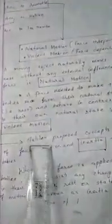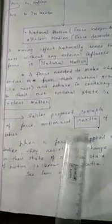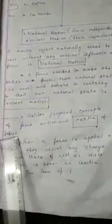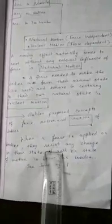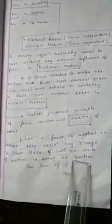Now I am going to talk about Galileo's ideas. Galileo proposed the concepts of force, motion, and inertia of bodies. The new term here is inertia. When a force is applied on bodies, they resist any change in their state of rest or state of motion — this is known as inertia.